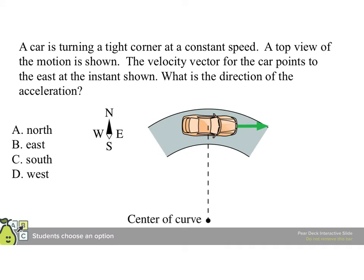A car is turning a tight corner at constant speed. A top view of the motion is shown. The velocity vector of the car points to the east at the instant shown. What is the direction of the acceleration?